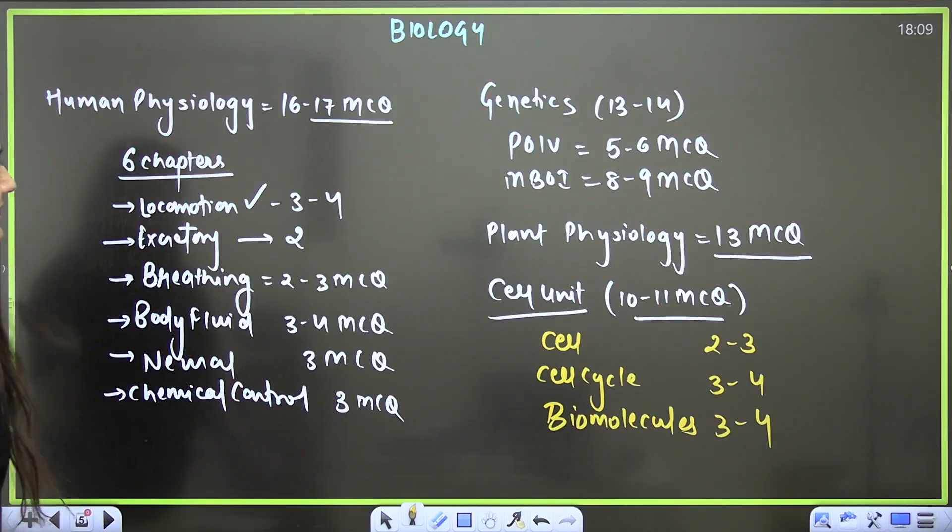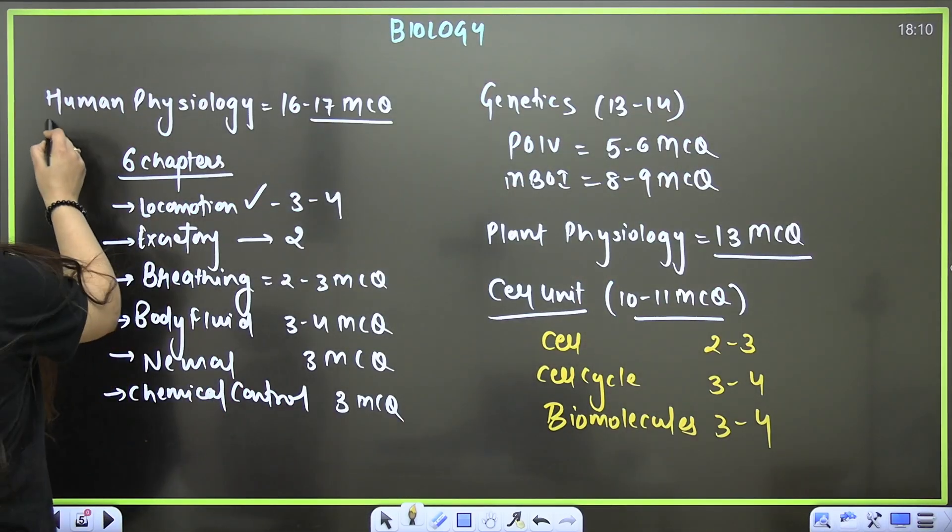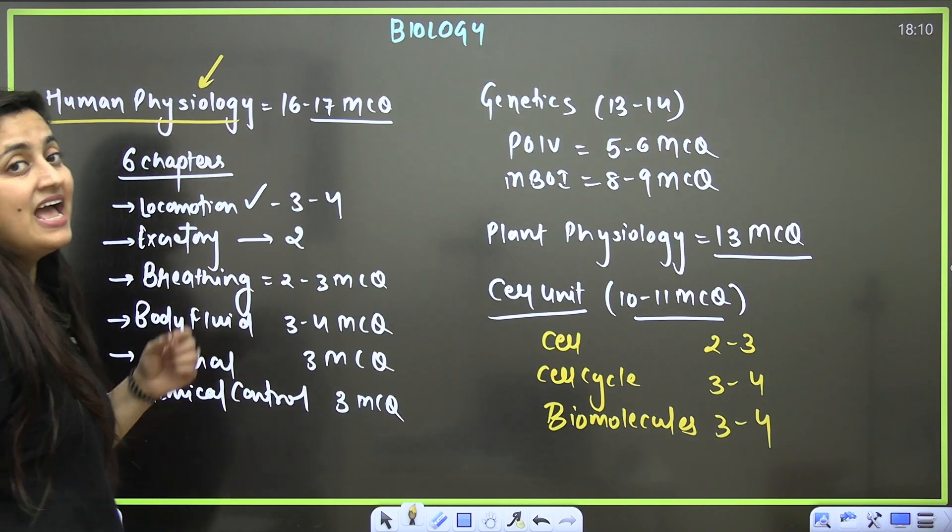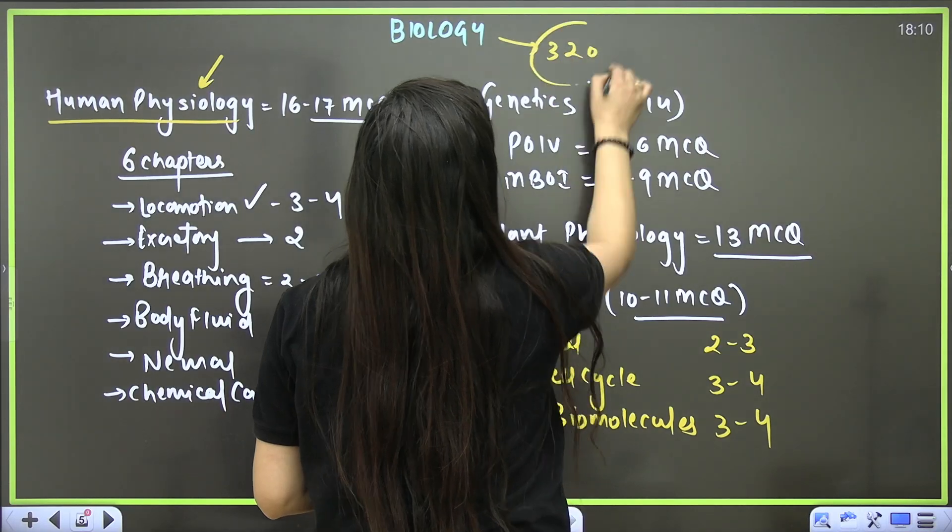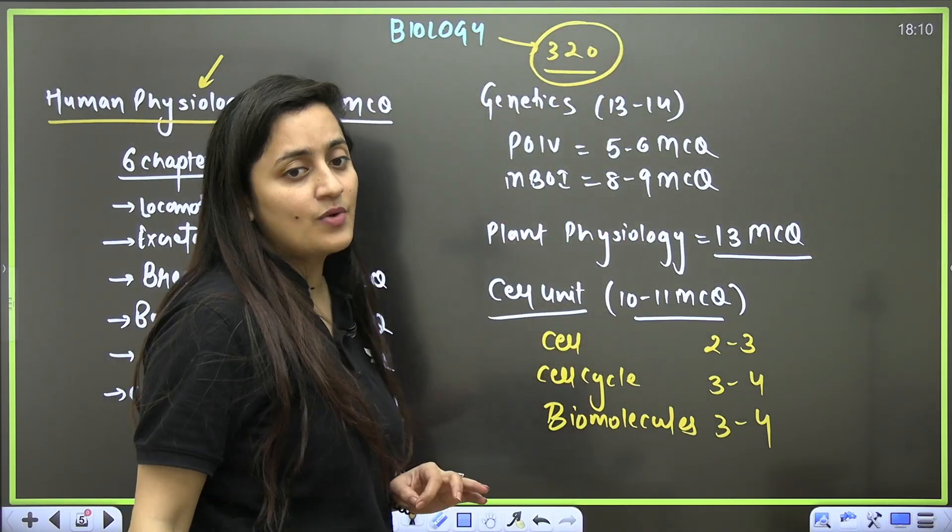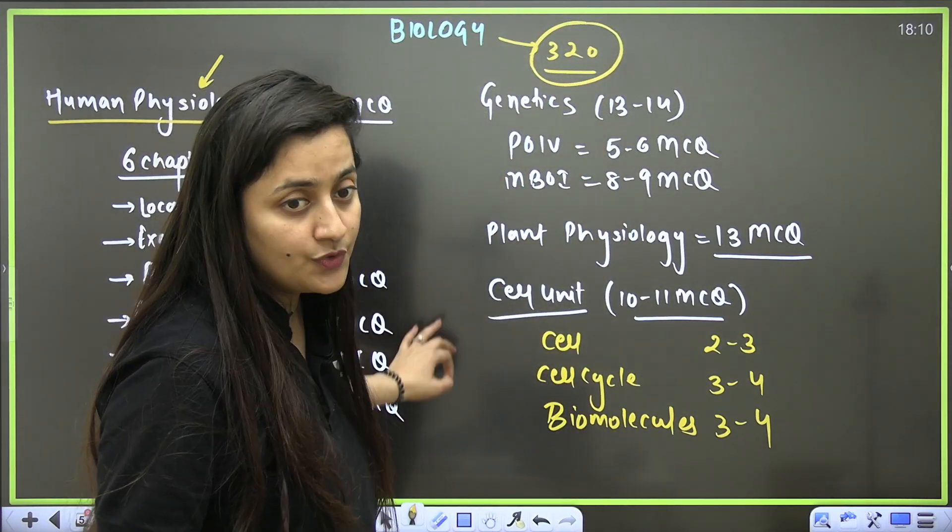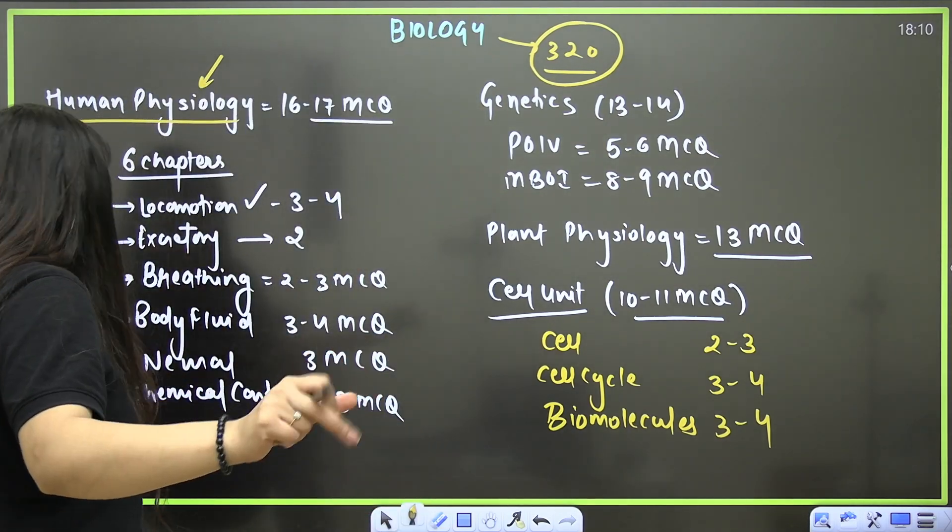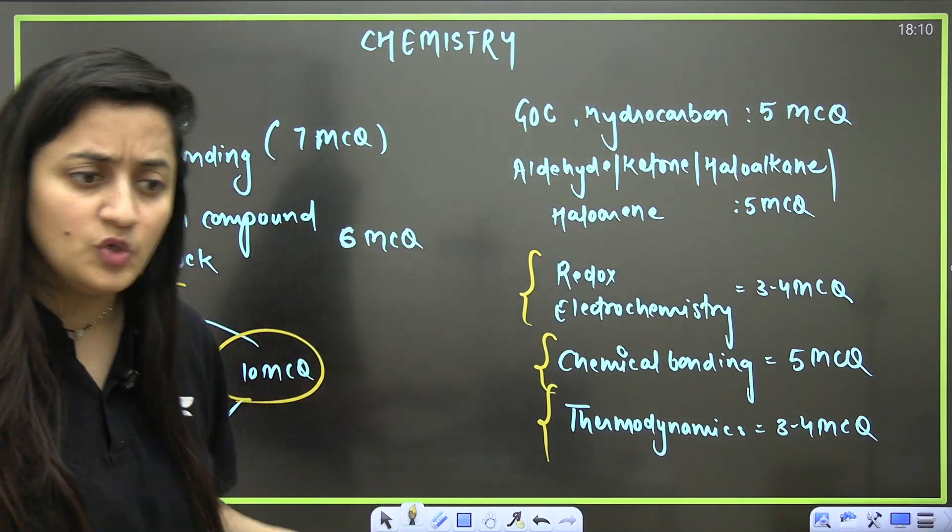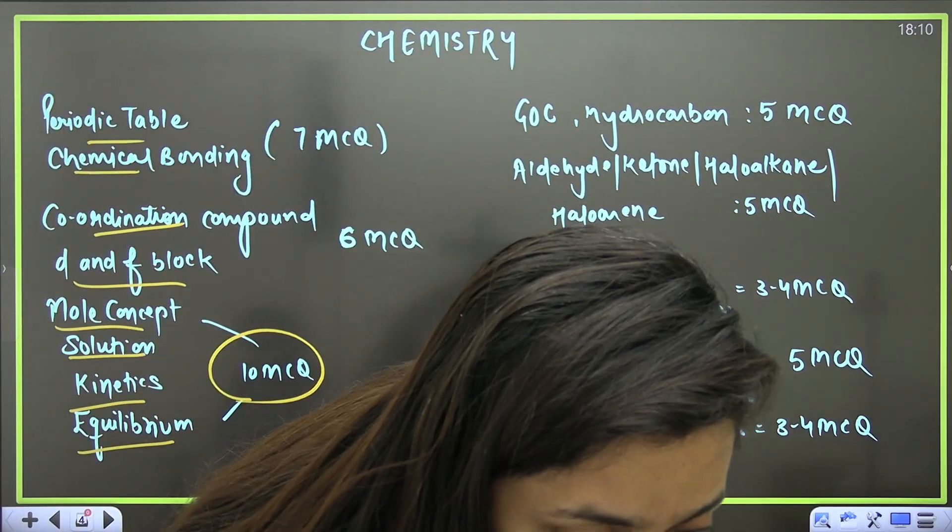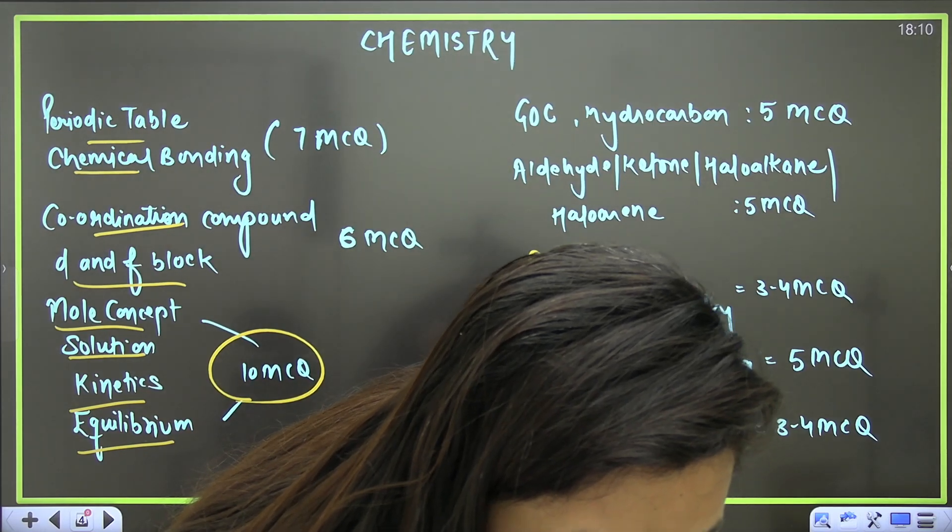Now let's move to the next part, of course biology. We are going to talk about the units. It is the most scoring part. If you complete these chapters, at least 320 marks minimum you can score. From here, approximately again 40-42 questions you will get from this list of chapters.